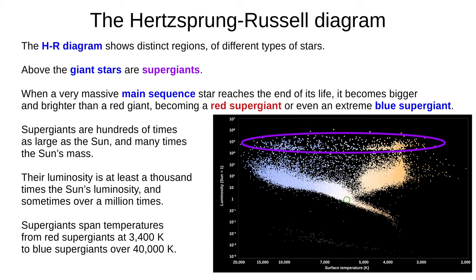Finally we have supergiants, above the giants. When a very massive main sequence star reaches the end of its life it becomes much bigger and brighter than a red giant, becoming a red supergiant or even an extreme blue supergiant. They are hundreds of times the size of the Sun and many times more massive. Their luminosity is at least 1,000 times the Sun's and in some cases over a million times the Sun's. Supergiants span a wide range of temperatures, from cool red supergiants at 3,400 Kelvin up to hot blue supergiants over 40,000 Kelvin.